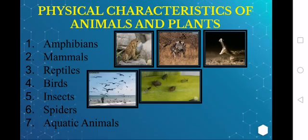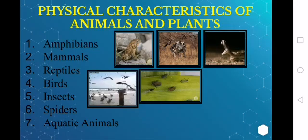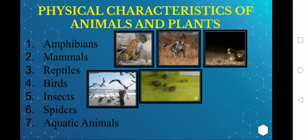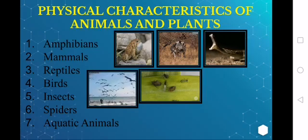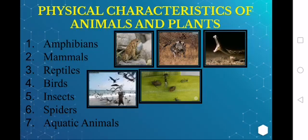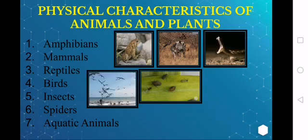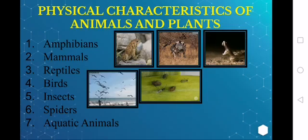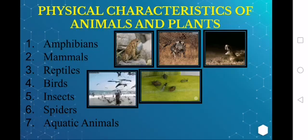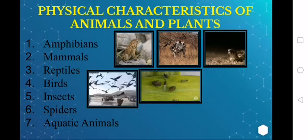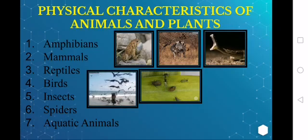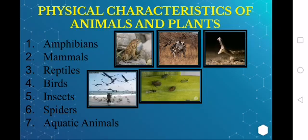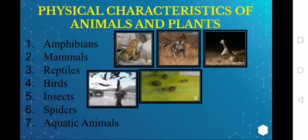Then we have insects. Most of these are small air-breathing animals. They have six legs and two antennas. They have three body sections: head, thorax, and abdomen. Examples are spiders, cockroaches, etc. Ants and cockroaches are common examples — you can see they have two antennas. There are many types of insects.